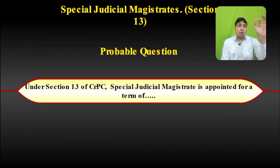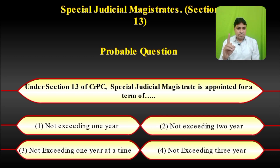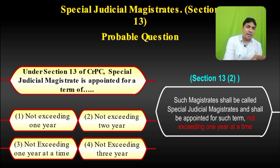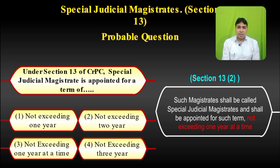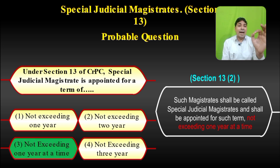Probable question on section 13: Under section 13 of CrPC, Special Judicial Magistrate is appointed for a term of — not exceeding one year, not exceeding two years, not exceeding one year at a time, or not exceeding three years? Section 13 sub-clause 2 states: such magistrate shall be appointed for such a term not exceeding one year at a time. Students may be confused between option 1 (not exceeding one year) and option 3 (not exceeding one year at a time). The correct answer is: not exceeding one year at a time.